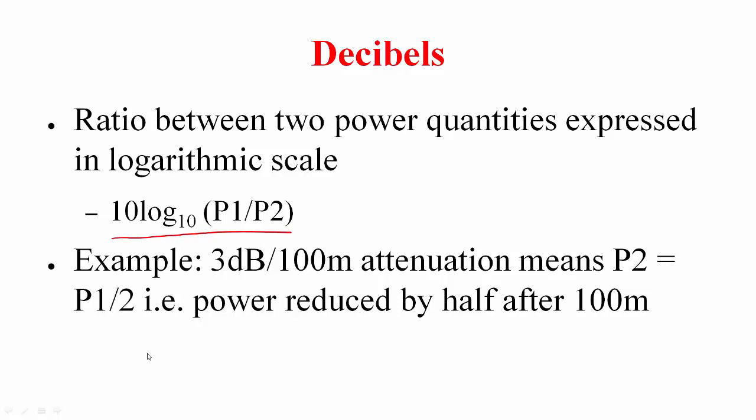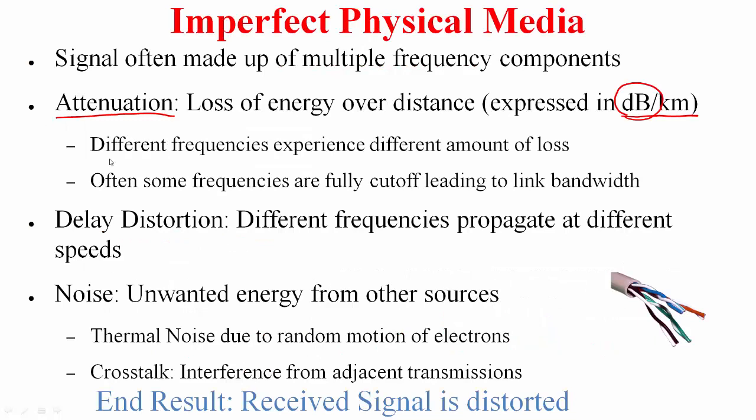So if I say 3 decibels, that means 3 = 10 log₁₀(P1/P2), which implies P1/P2 is 10^0.3, which is roughly equal to 2. In other words, the power reduced by half after 100 meters means it suffered a 3 dB loss after 100 meters.